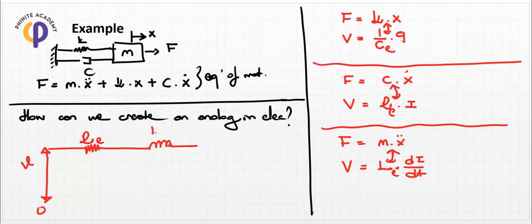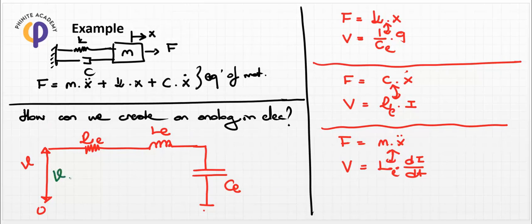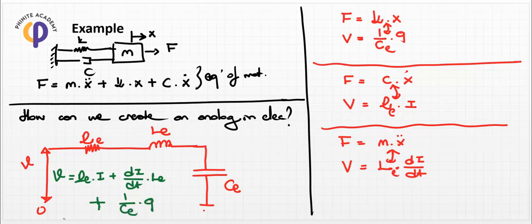Adding the inductance element L_e and the capacitance element C_e (representing the spring coefficient), the complete electrical circuit analog is formed. The final equation becomes: voltage equals R_e times i, plus L_e times di/dt, plus (1/C_e) times q — which is the electrical analog of the mass-spring-damper equation.